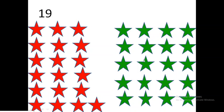Let's count the final group: one, two, three, four, five, six, seven, eight, nine, ten, eleven, twelve, thirteen, fourteen, fifteen, sixteen, seventeen, eighteen, nineteen, twenty. So we have twenty green stars.